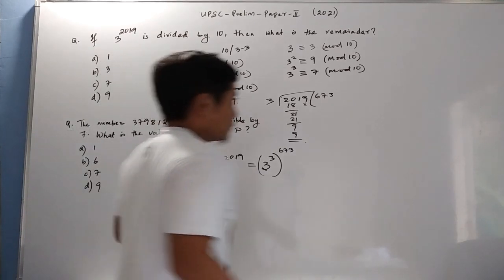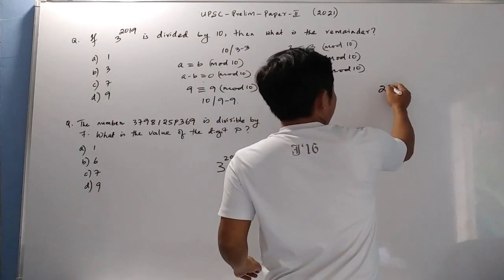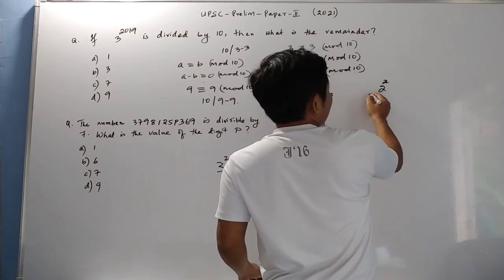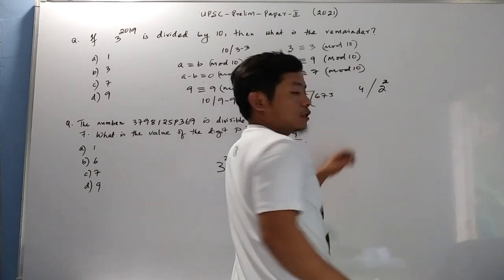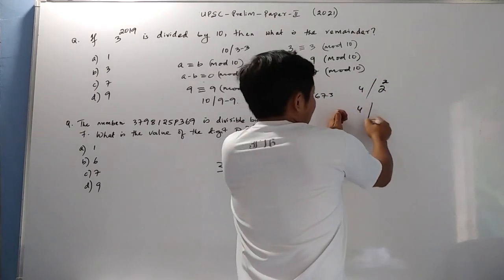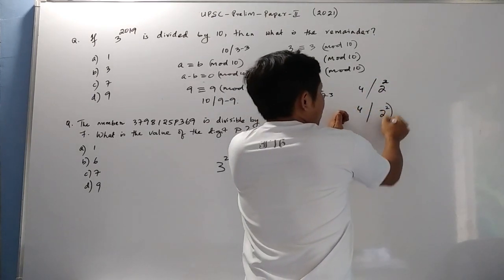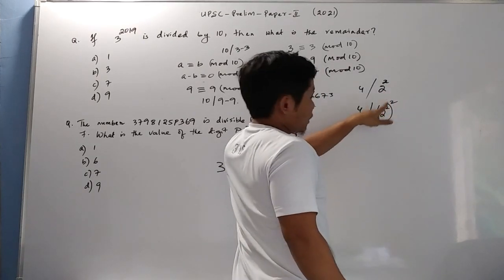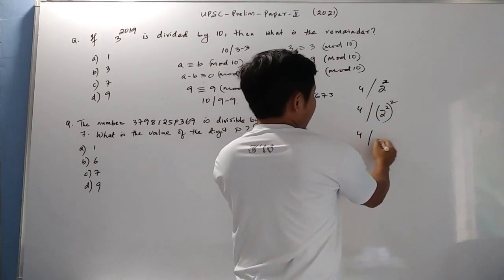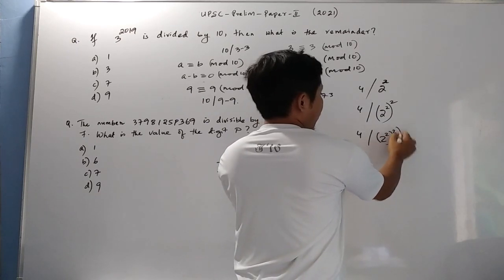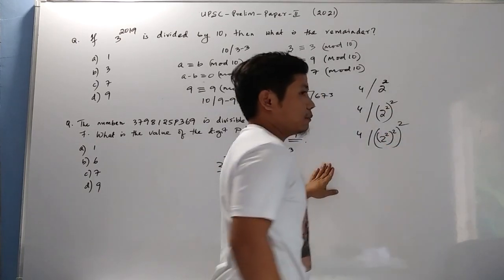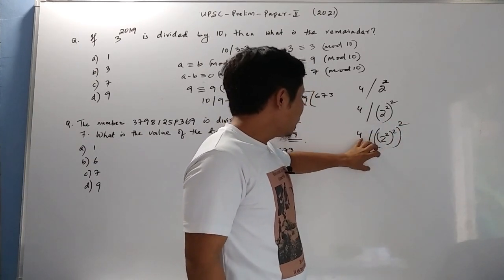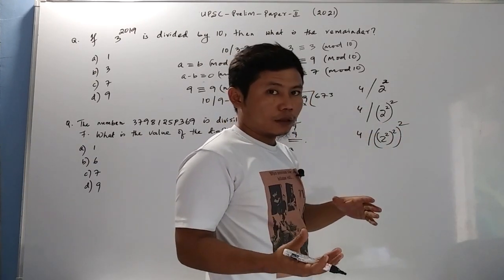So that means 2 squared is divisible by 4, isn't it? And 4 will also still divide 2 squared squared, which is 16. Raising the power again, 4 will still divide this. That means when these things are divided by 4, it will leave no remainder.